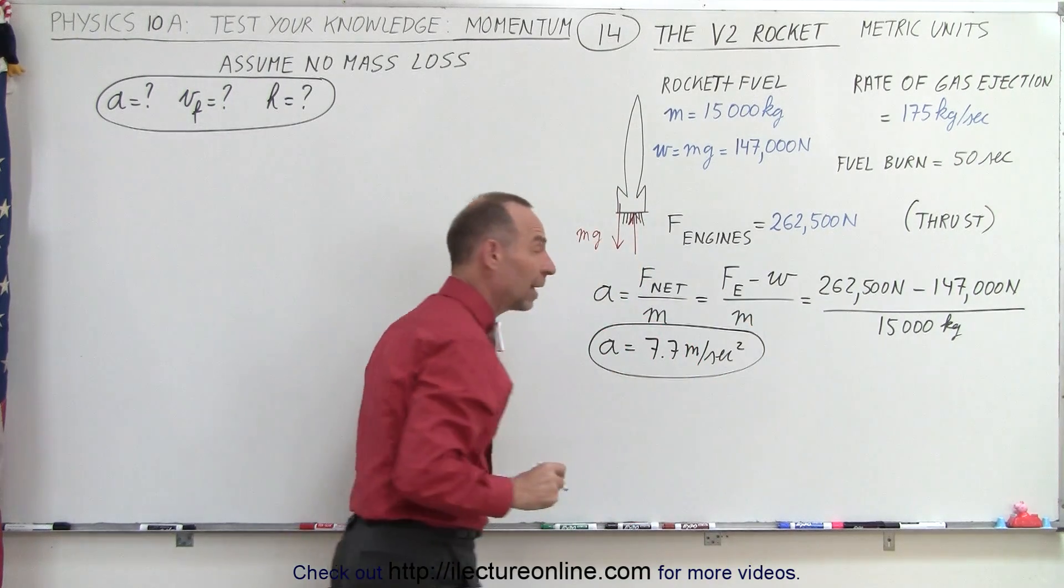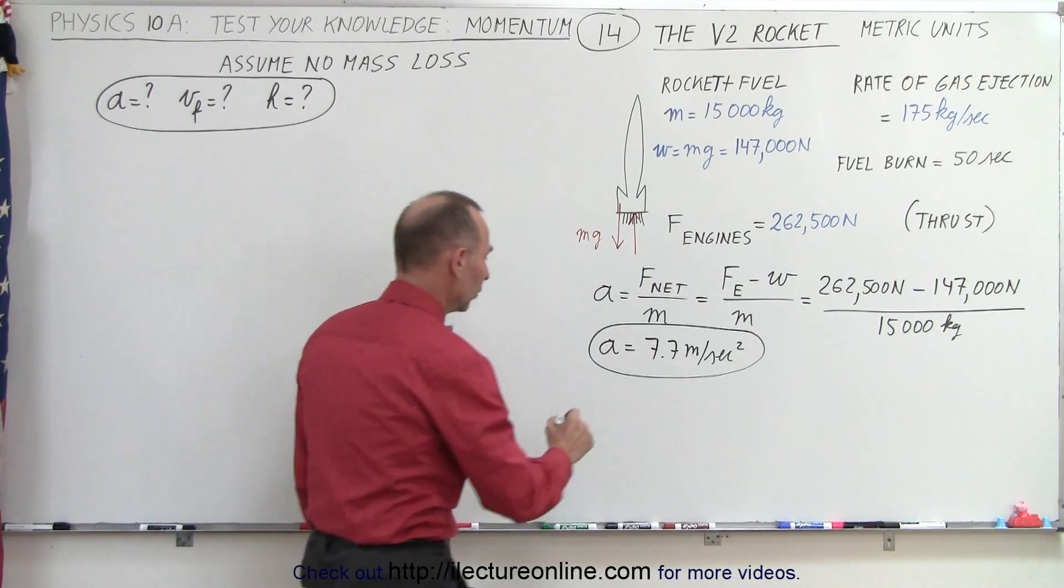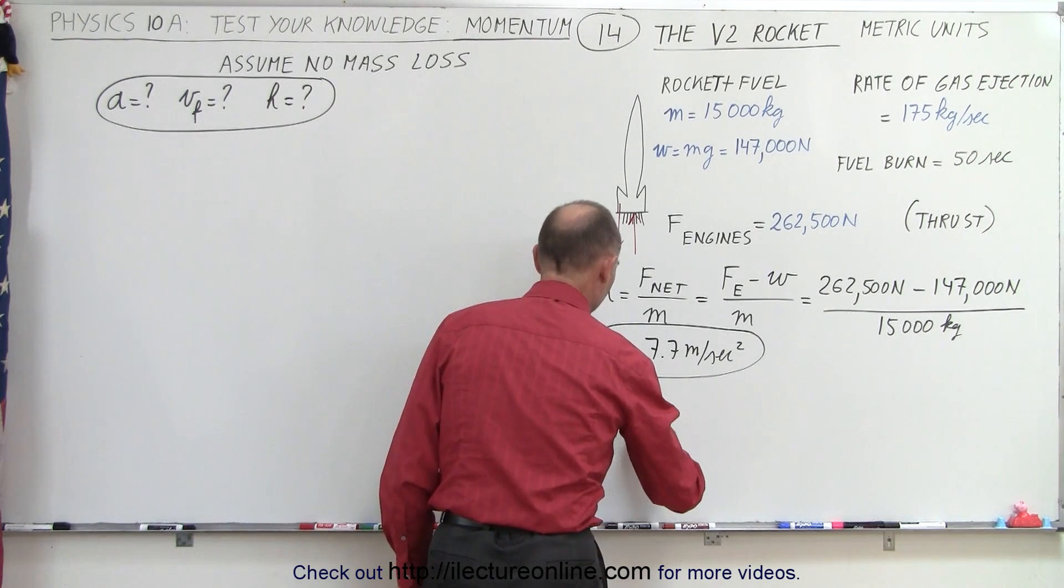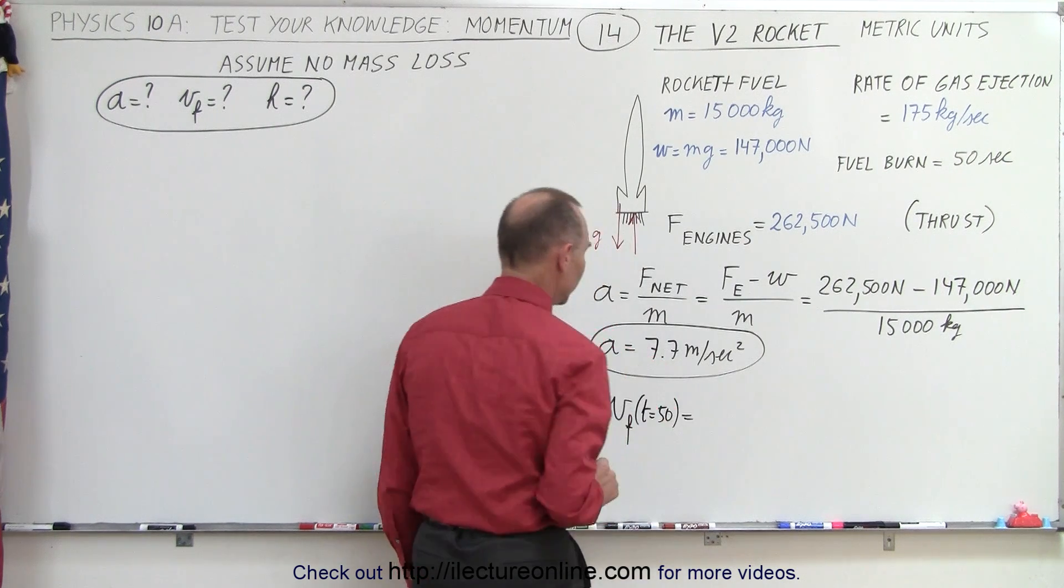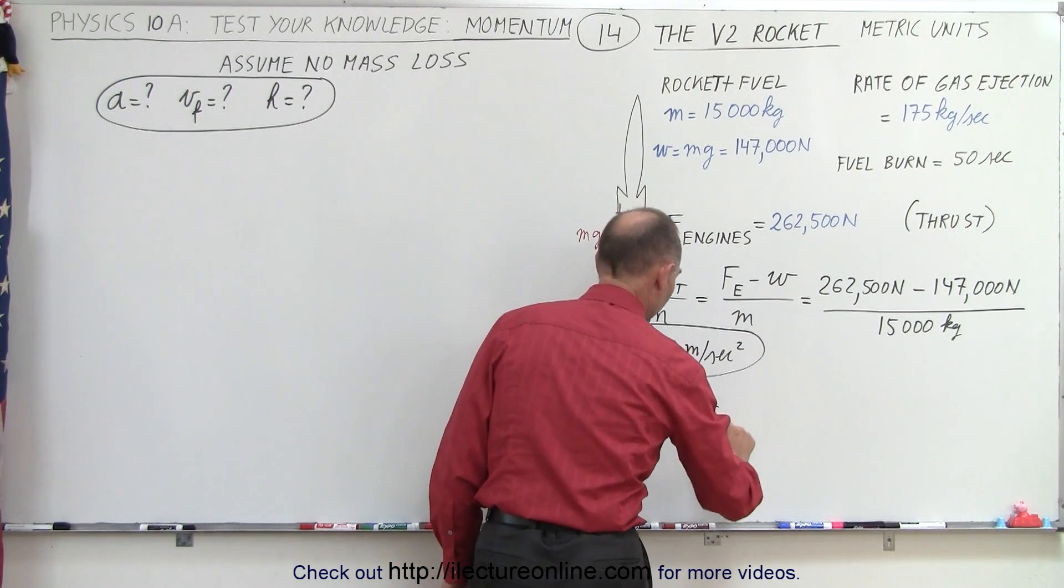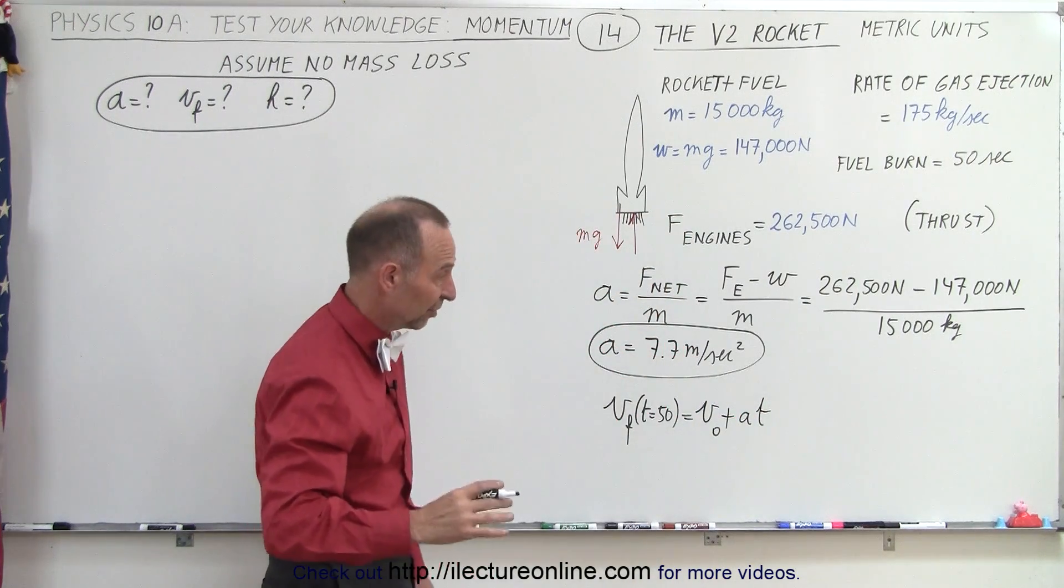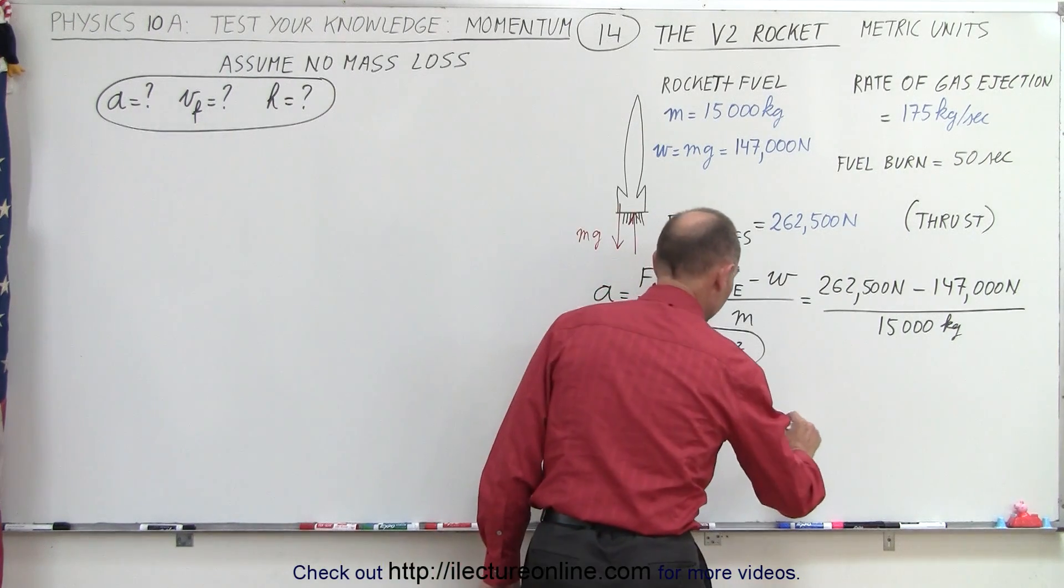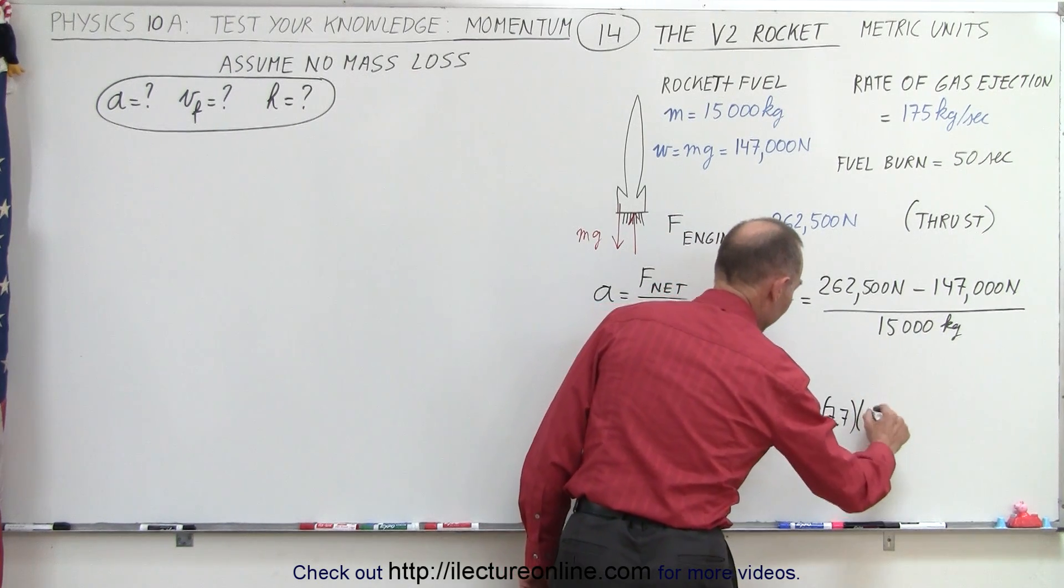Now let's find out what the velocity will be when the fuel is burned out. So velocity final at t equals 50 seconds is equal to the initial velocity plus acceleration times the time. Of course, initial velocity will be zero on the ground, so this is equal to zero plus 7.7 times 50.